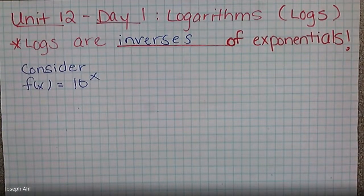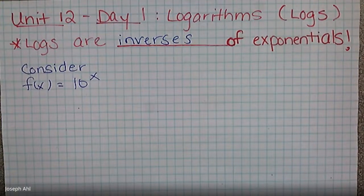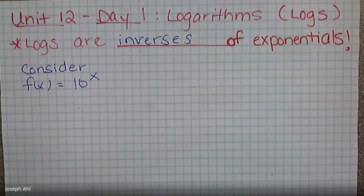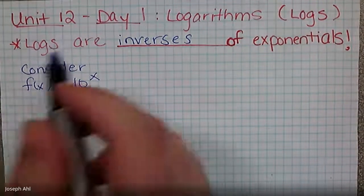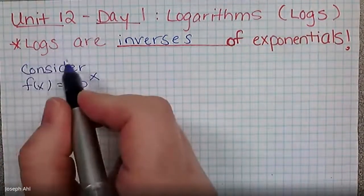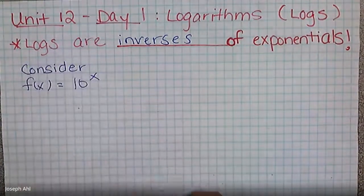If we think about X squared, we can undo X squared by taking the square root. So the inverse operation of squaring something is square rooting something. The inverse operation of multiplying is dividing. If we have adding, we have subtracting. Well, if we have raised something to the X power, we have to have a way to undo that. And that's what logs are all about.